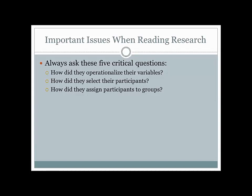The third question is: how did they assign participants to groups? This is especially important if they try to make any kind of cause and effect argument. Were participants assigned randomly? Did they have to use intact groups? The fourth question is: does the method used allow for causal claims? You need to ask yourself whether this is a true experiment or not — the only way to make causal claims is if there's a true experiment.